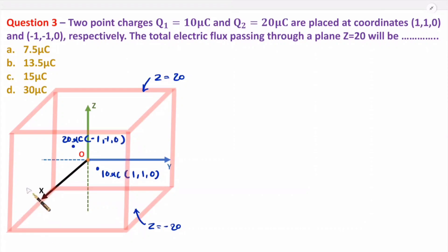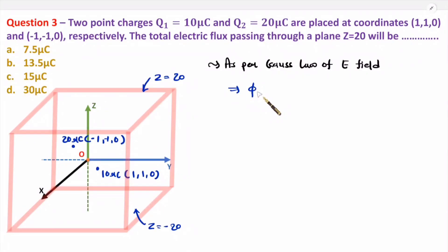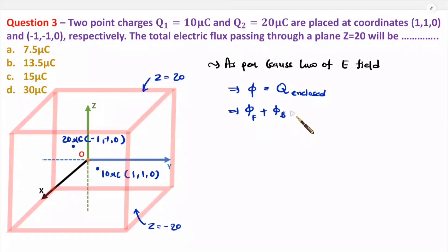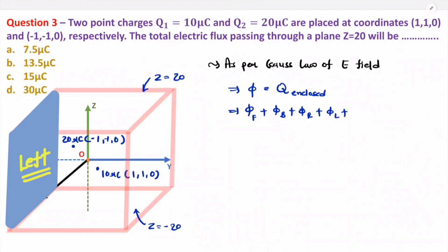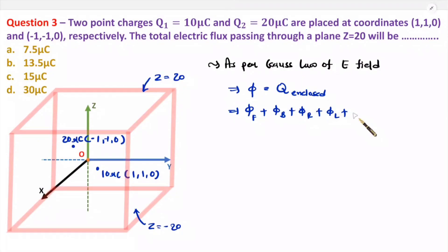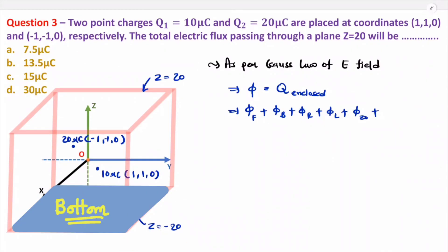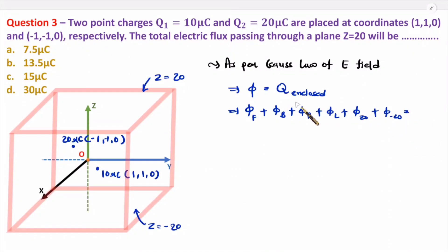The total flux is due to six different surfaces: front (φf), back (φb), right (φr), left (φl), top at z = 20 (φ_z20), and bottom at z = minus 20 (φ_z−20). This equals the total charge enclosed: 20 micro plus 10 micro equals 30 microcoulombs. Since the top and bottom surfaces (z = 20 and z = −20) have infinite dimensions, the front, back, right, and left surfaces have negligible dimensions, so their flux contributions are zero.